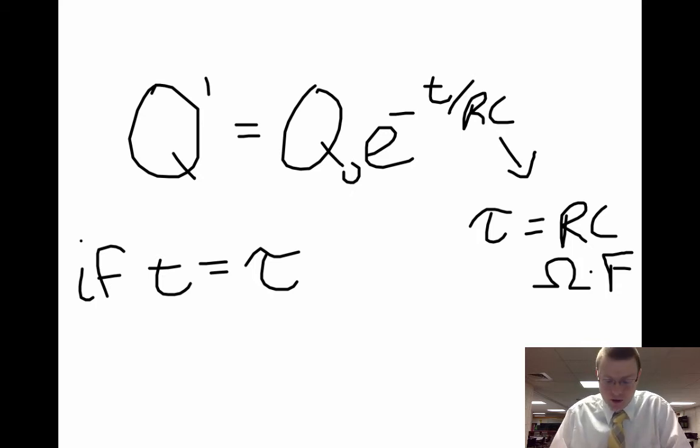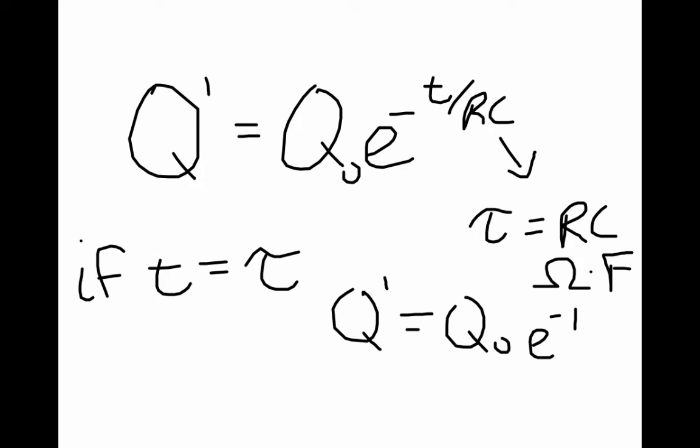Well, in that case, T would also equal RC, and we'd be left with our original charge, e to the minus 1. And e to the minus 1, we know is a number that comes out to 0.37.